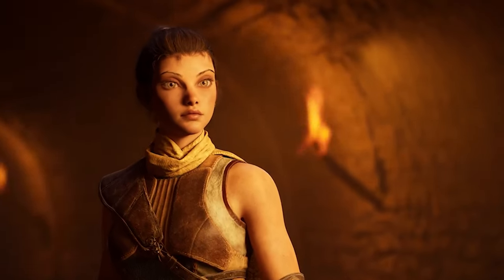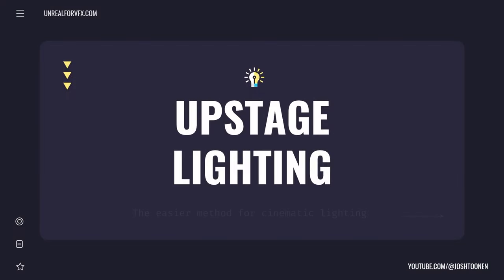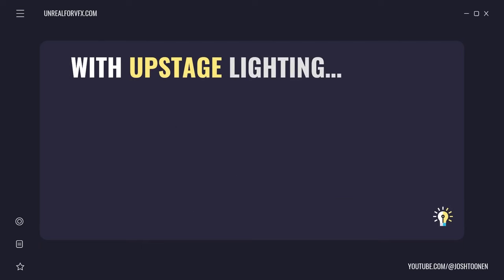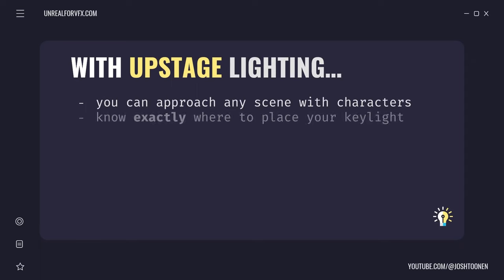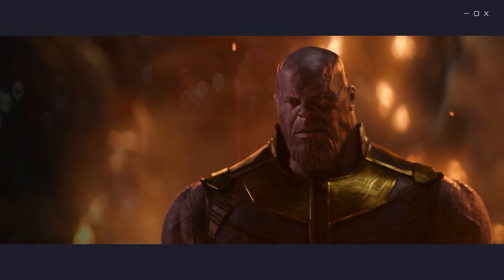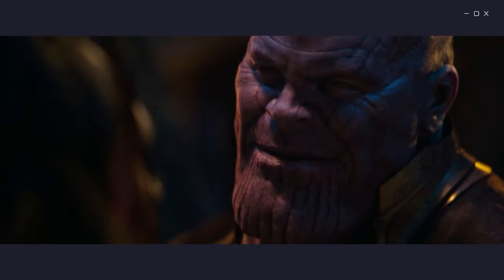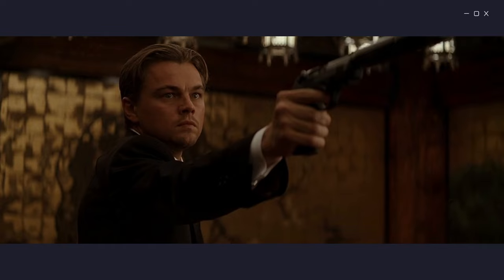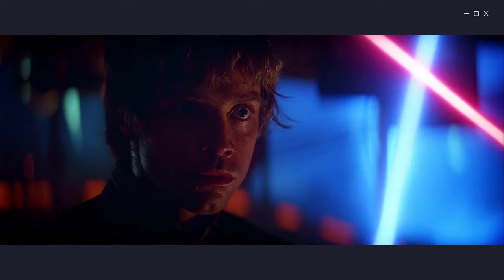The big concept I want to introduce in this video is upstage lighting. Three-point lighting is old school, but by using upstage lighting, you can approach any shot with characters, set up your camera, and know exactly where you need to place your key light and dress other lights around your scene as needed. This technique is used in so many of my favorite movies, from big-budget action blockbusters down to intimate indie dramas.